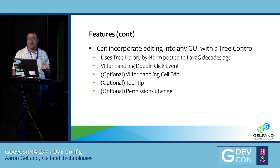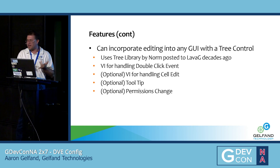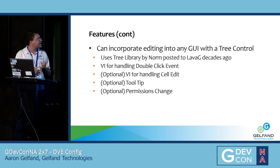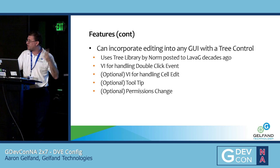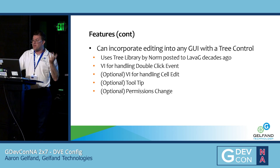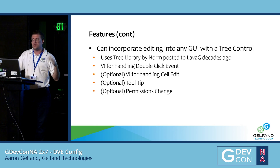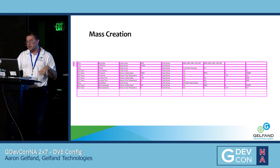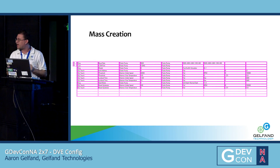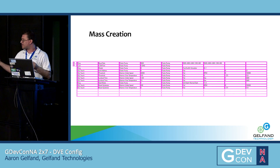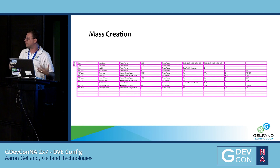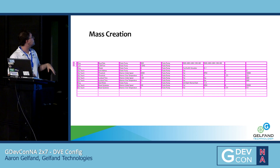I have a VI for handling the double-click event — most of the time I'm going to have double-click. I have a VI for handling cell edit, tool tips, permission chain, and permission changes, and those are all optional. For mass creation, I use a string data table to tell me all my variables. I can do mass creation in Excel, and I can also do looping and other things when I have lots of very similar data keys to present to the user.